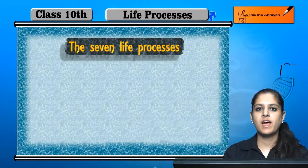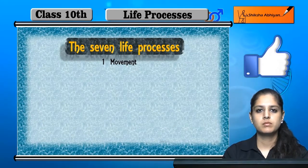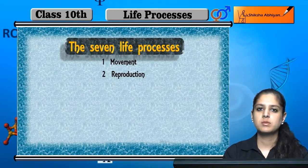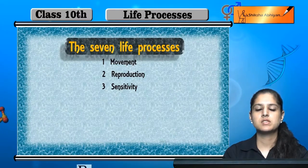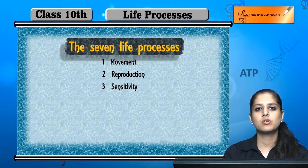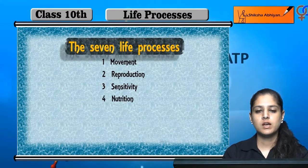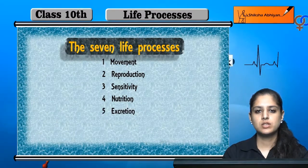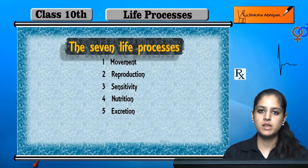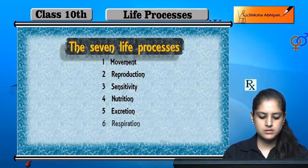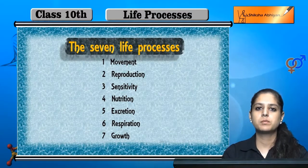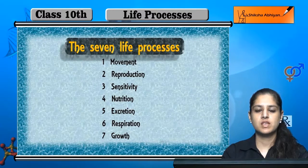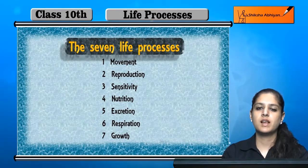Finally, the seven life processes are: Movement — all living beings move. Reproduction — all living beings reproduce. Sensitivity — all living beings are sensitive to their surroundings and environment, responding to any change. Nutrition — food and nutrients. Excretion — removing waste materials from the body. Respiration — all living beings respire. And lastly, Growth — all living beings grow. These are the seven life processes which make living beings alive.